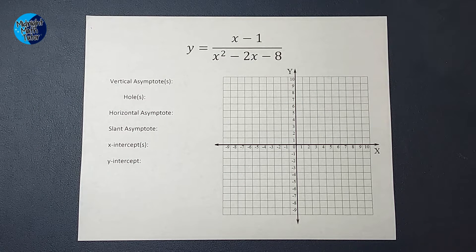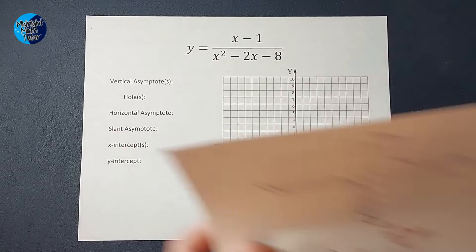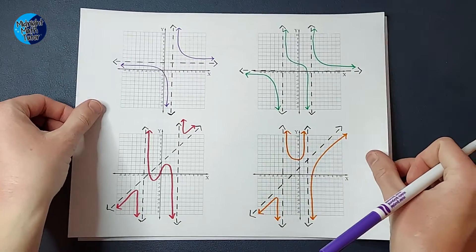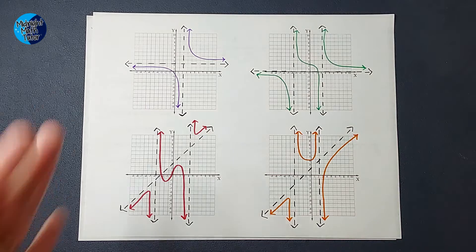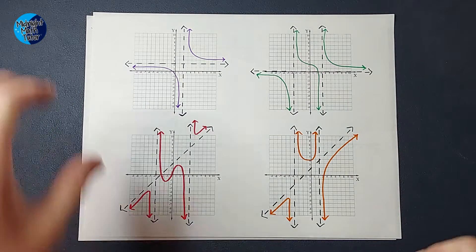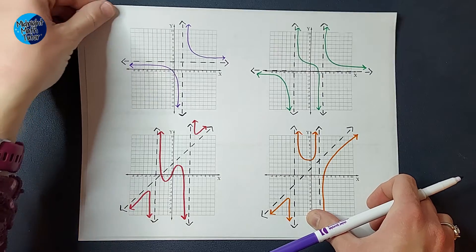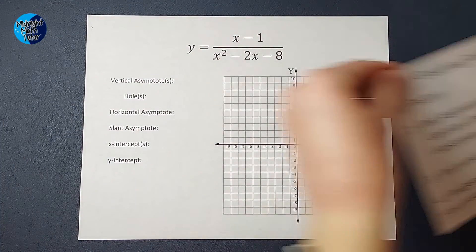Hey guys, grab your popcorn, we're going to graph a rational function. I just wanted to give you an idea of what these graphs look like — this is just a couple of examples, not all of them. So when we graph these, we follow a few steps: first we're going to factor, then find our asymptotes and check for holes, find our x and y intercepts, and then figure out the general shape of our graph.